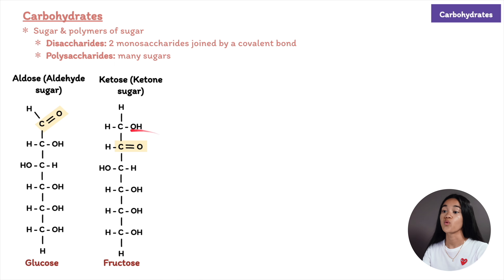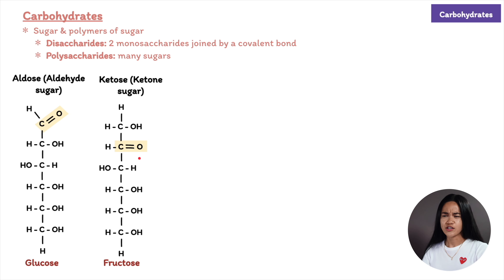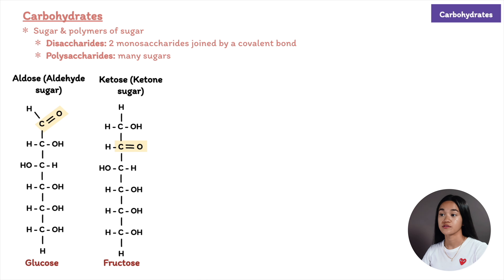For example, glucose is an aldose — the carbonyl group is at the end of the carbon skeleton. Fructose is a ketose and is actually an isomer of glucose, meaning they have the same molecular formula and the same number of atoms but differ in the arrangement of their atoms. We can also classify monosaccharides based on the size of their carbon skeleton, which ranges from three to seven carbons long.